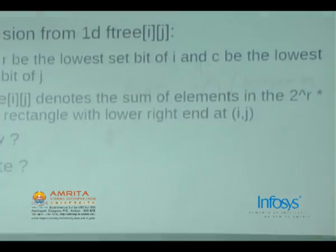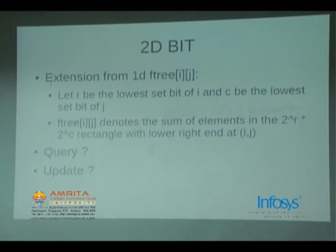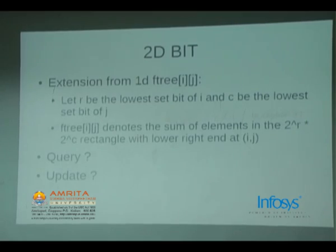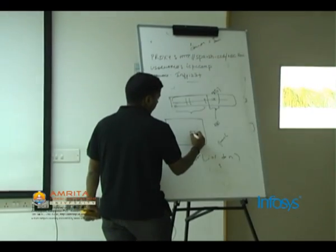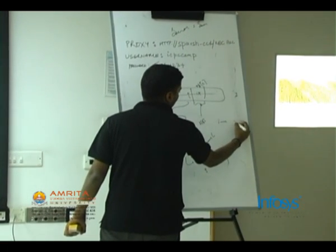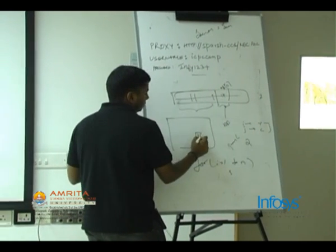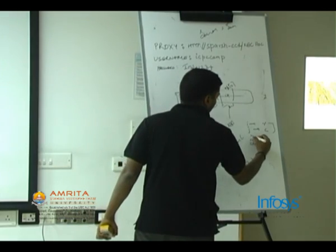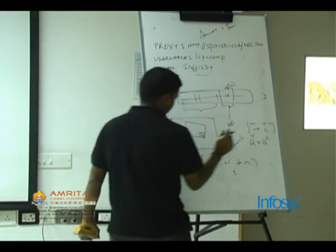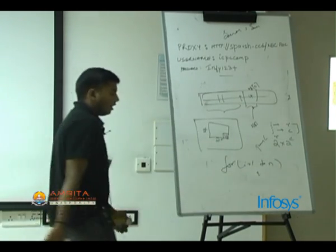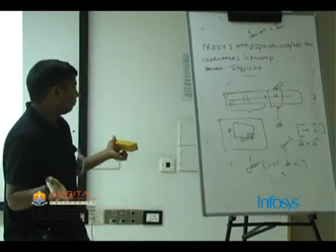I have defined one-dimensional binary indexed trees or one-dimensional Fenwick trees. We will now go to two-dimensional Fenwick trees. In a one-dimensional Fenwick tree, the low bit of i covers 2^(low_bit of i) numbers before i. For a two-dimensional Fenwick tree, if I am at position (i, j), the low bit of i is r and the low bit of j is c, then it defines the sum of elements in the 2^r × 2^c sub-rectangle.